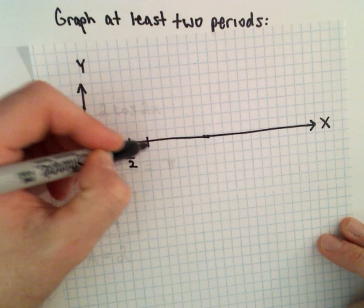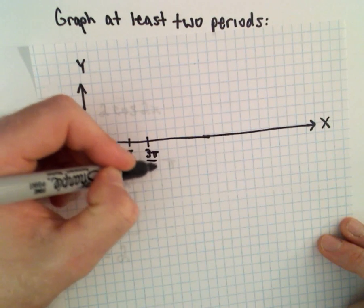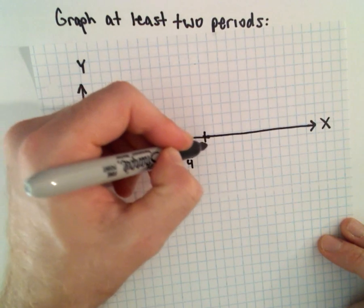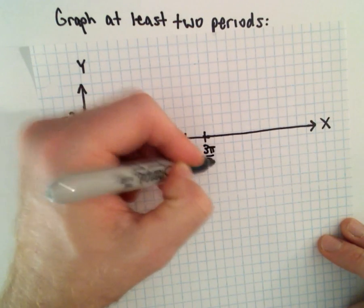So let's see, we'll have π over 4, π over 2, 3π over 4, we'll have π, 5π over 4, 6π over 4 will be 3π over 2.